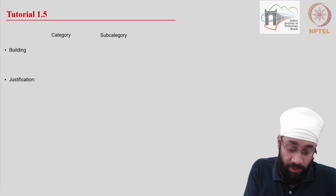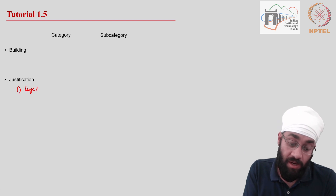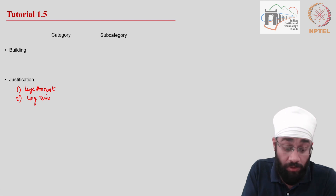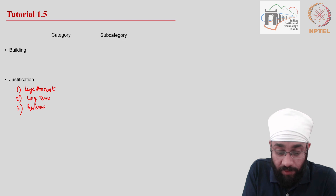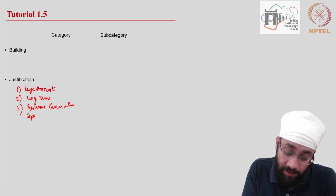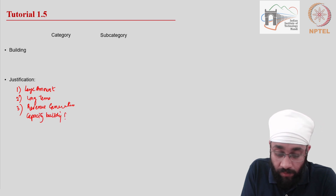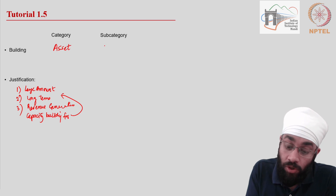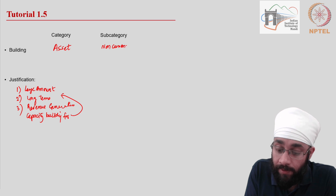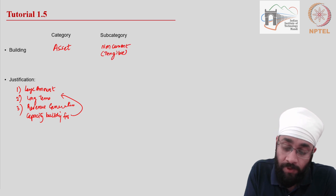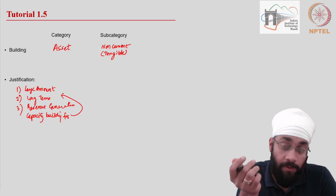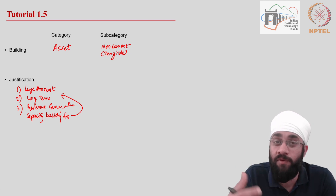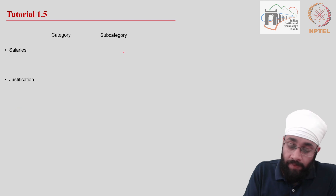Building: you are purchasing a building, which involves a large amount of money and a long-term benefit. You are building capacity for the long term and expecting revenue generation over many years. When that happens, you call it an asset. It is a non-current asset and also a tangible asset. Any physical item you purchase that stays with you for a longer duration and helps you generate revenue year after year is treated this way.